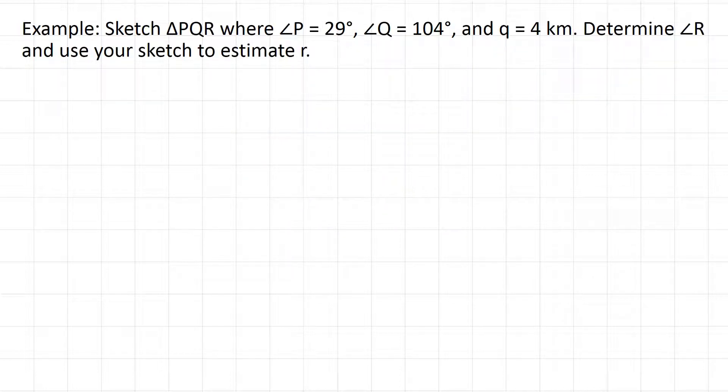In the second example, we're asked to sketch a triangle PQR, where angle P is 29 degrees, angle Q is 104 degrees, and we're told side length q is 4 kilometers. They ask us to determine angle R and then use our sketch to estimate side length r.